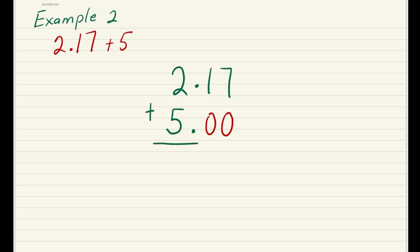So to add these up: 7 plus 0 is 7, 1 plus 0 is 1. We always have to remember to bring down the decimal point, and 2 plus 5 is 7. So for our question 2.17 plus 5, our answer is 7.17.